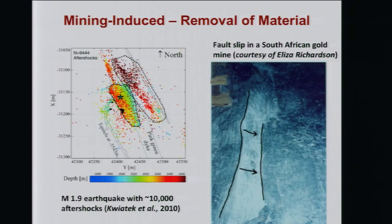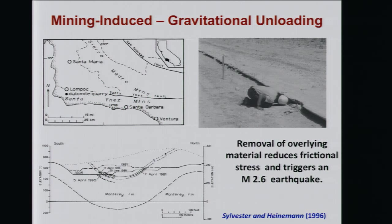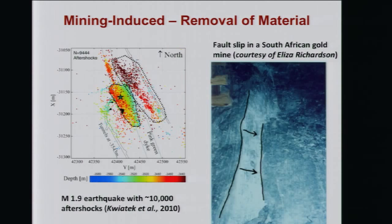Let's look at some specific examples. I'll start with a deep gold mine in South Africa. Earthquakes there, although small, are extremely dangerous because people are down where the earthquakes happen. Here's a surface of a fault in a mine that has slipped suddenly in an earthquake. On the left, this is a magnitude 1.9 earthquake with close to 10,000 aftershocks — a little earthquake with thousands of aftershocks. We know about all those because instruments are down in the mine. This earthquake was induced by mining operations. The slip was maybe 10 centimeters or a little more.